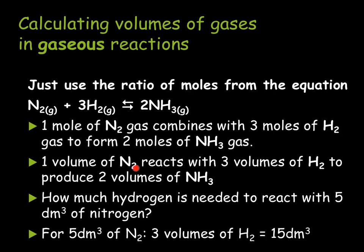This means that 1 volume of nitrogen reacts with 3 volumes of hydrogen to produce 2 volumes of ammonia. So a question might be, how much hydrogen is needed to react with 5 dm cubed of nitrogen? Therefore if we have 5 dm cubed of nitrogen we must have 3 times the amount of hydrogen. So the hydrogen we would need would be 15 dm cubed and this would make 10 dm cubed of ammonia.